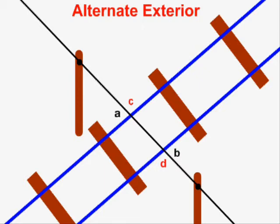Angles C and D are also alternate exterior. They are alternate because they are found on opposite sides of the transversal, and they are exterior because they are both found on the outside of the pair of parallel lines.